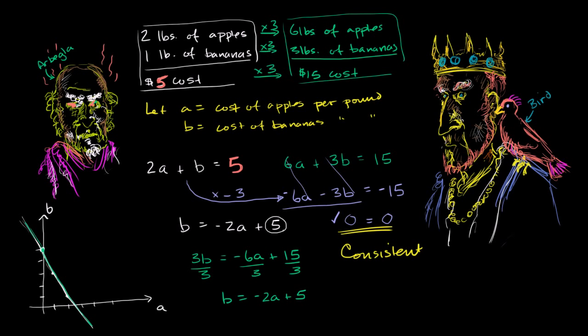This is consistent, and it is consistent. Zero equals zero. There's no shadiness going on here, but it's not enough information. This system of equations is dependent. It is dependent. And you have an infinite number of solutions. Any point on this line represents a solution. So you tell Arbegla, well, if you really want us to figure this out, you need to give us more information, and preferably we buy a different ratio of apples to bananas.